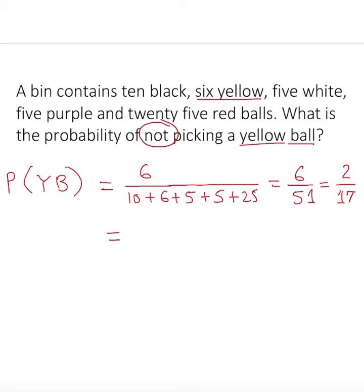That's the probability of getting a yellow ball. Now we are not looking for a yellow ball. We are looking for the probability of not getting a yellow ball. So how do we do that? We just subtract it. Simple.